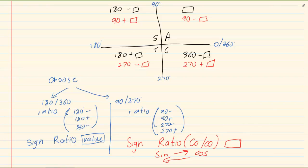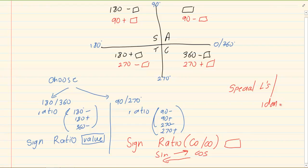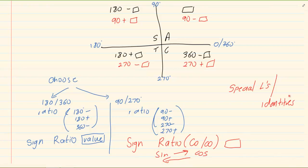Reduction can work two ways: 180 and 360, or 90 and 270. You choose 90 and 270 only when you are stuck — when the equation gives you a challenge or there is an odd value. After you do reduction, the answer is going to split two ways: it will go to special angles or identities. Reduction is just the introduction of the question; then you go to special angles or identities.